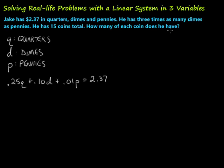Now it says he has three times as many dimes as pennies. That one can be a little bit of a brain bender sometimes. Let's just say, as an example, he has two pennies. If he has two pennies, that means he has three times as many dimes. So two times three would be six. So that means he has six dimes.